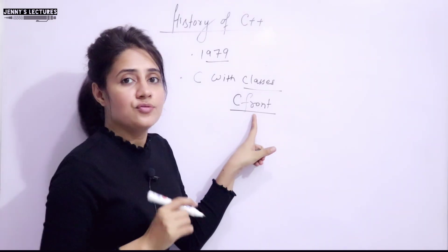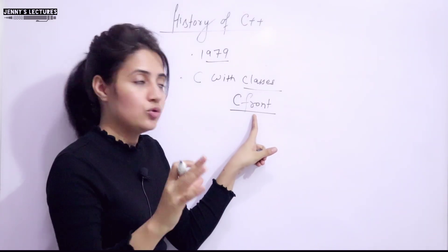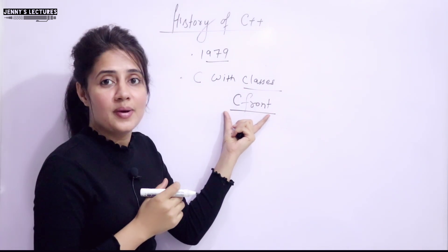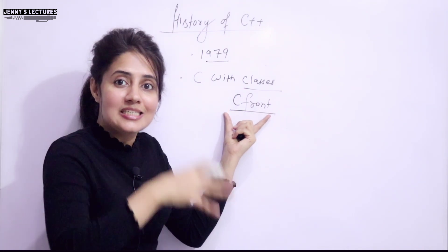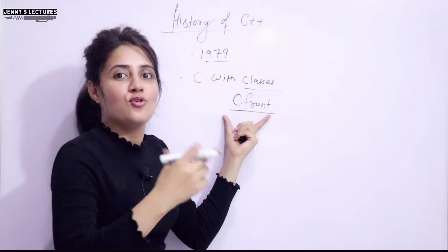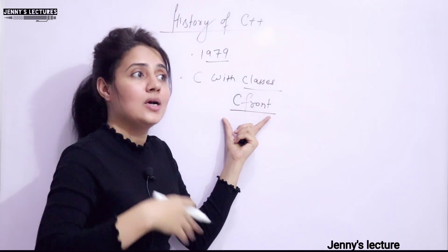It was derived from the C compiler. Cpre was a compiler. It was derived from that compiler. And the interesting fact is what? Cfront, this compiler was written in C with classes language only. So it was, you can say, self-hosting compiler, a compiler that will compile itself.